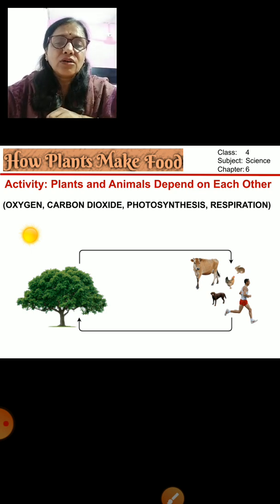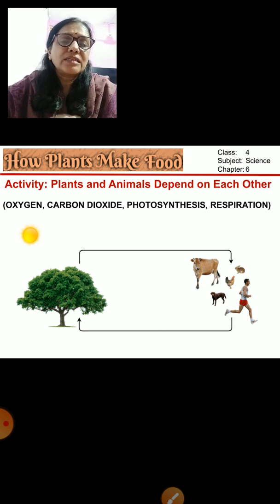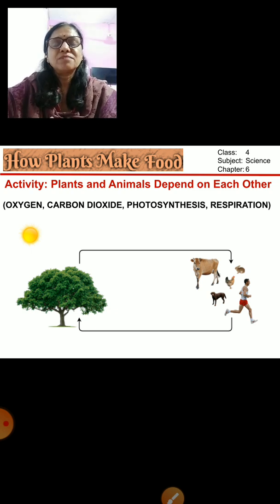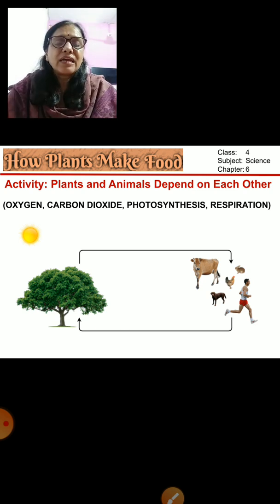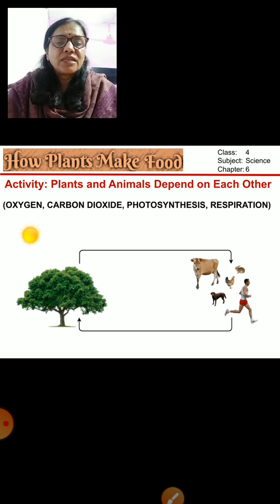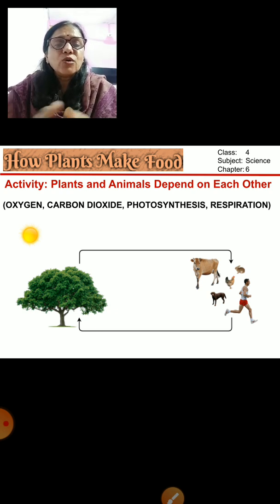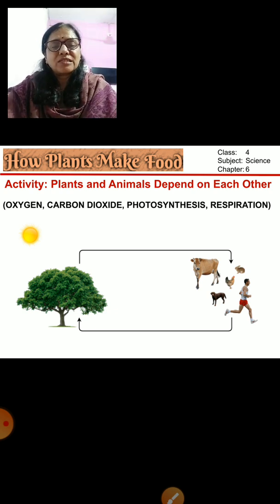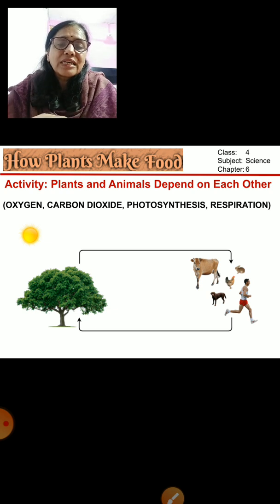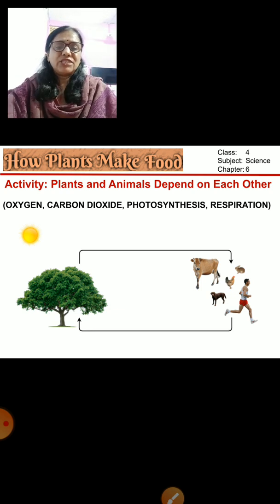Here is another topic about how plants and animals are dependent on each other. In the process of photosynthesis, oxygen is released, and we use this oxygen for the process of respiration. When we breathe in, we take in oxygen; when we breathe out, we give out carbon dioxide, which is again taken up by the plants for photosynthesis. So plants and animals are both dependent on each other.